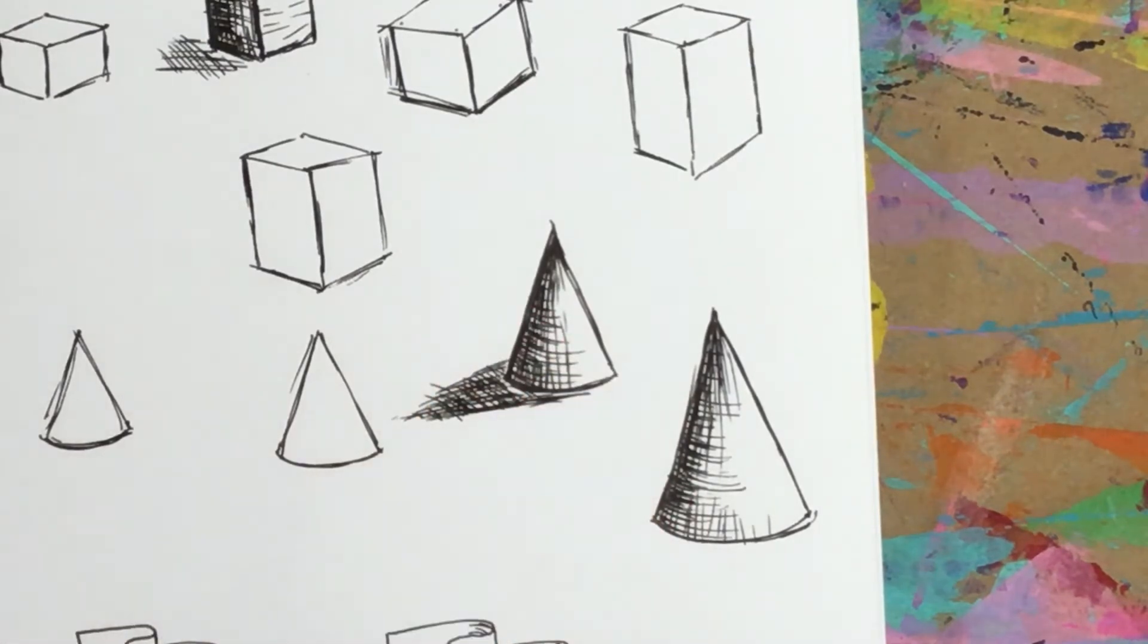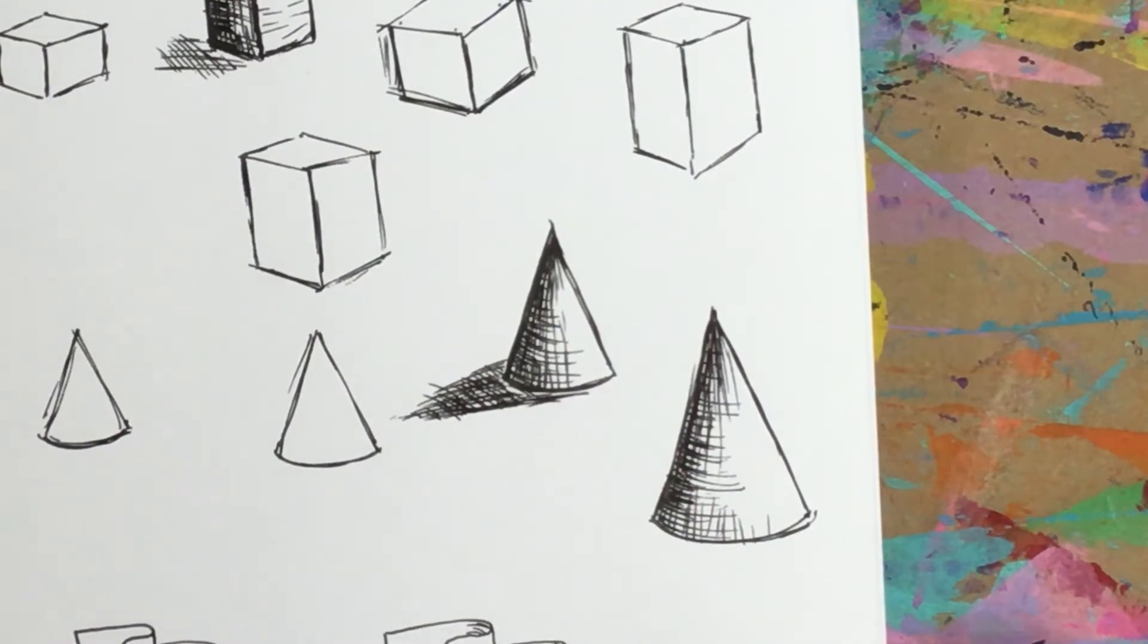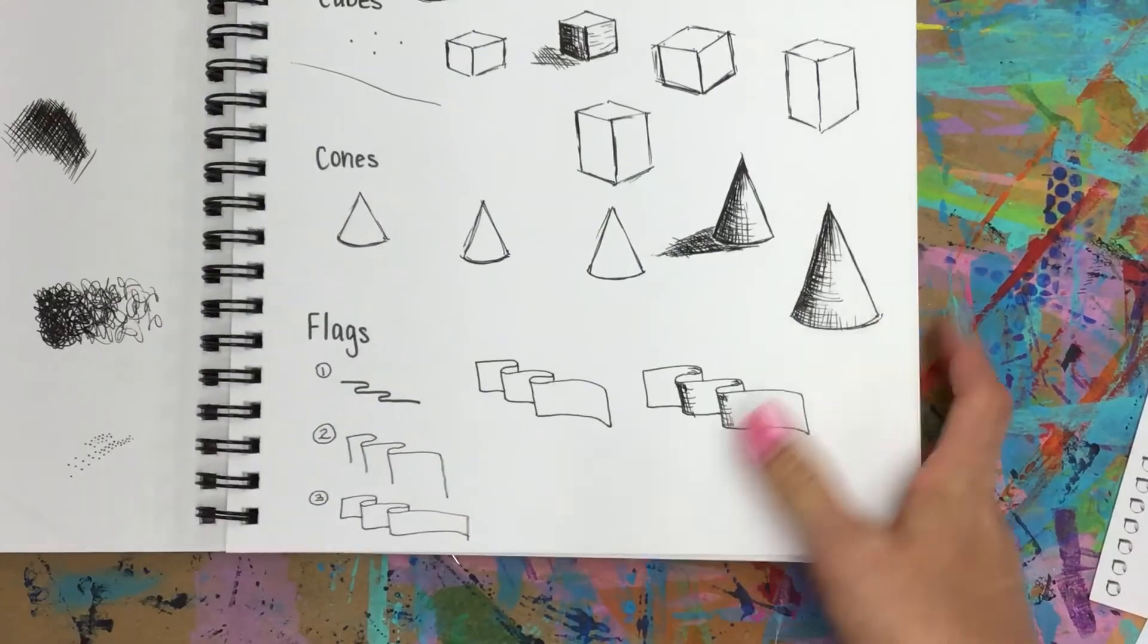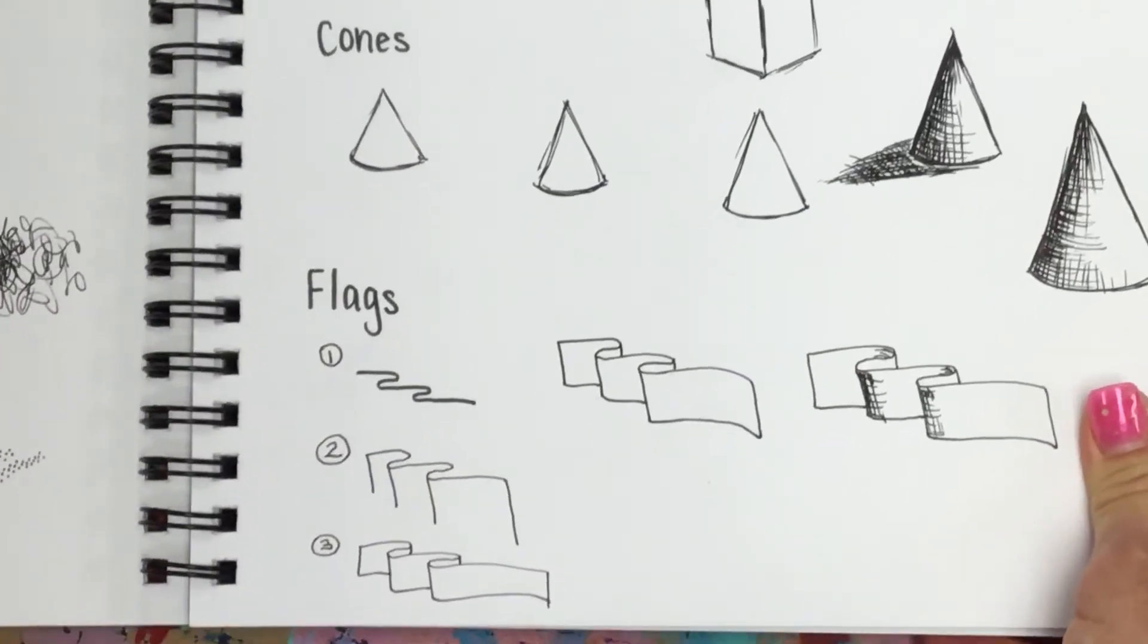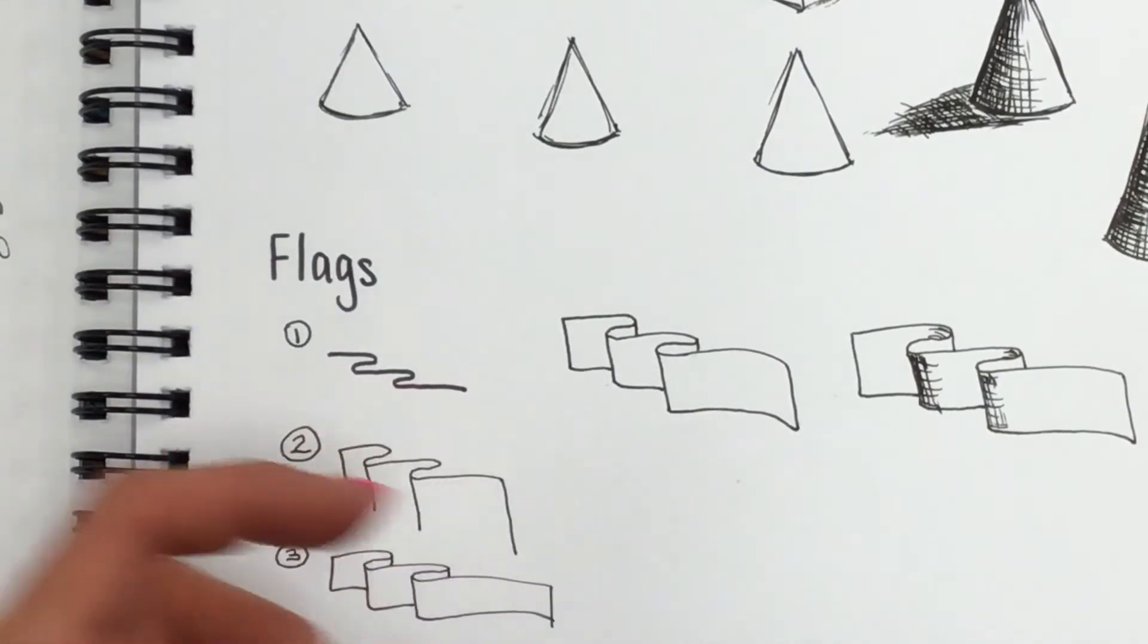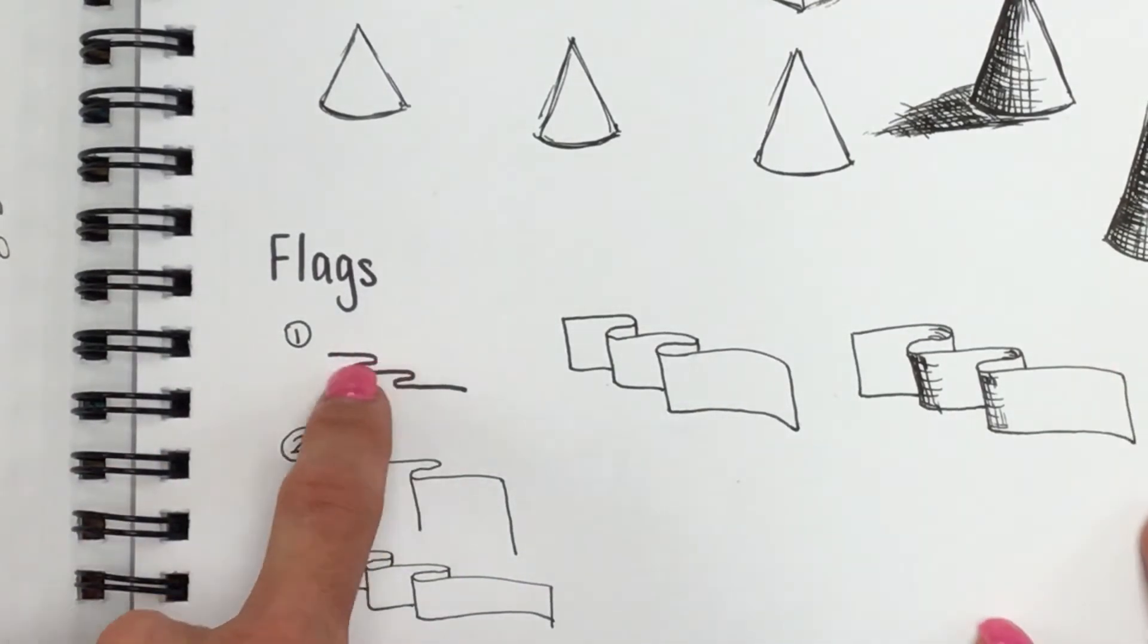Same with the cylinder, your shading lines will curve to show that it's still a rounded object. And then we did flags. For the flag, if you've never done one before, there's different ways to do it. This is how we're going to do them: you're going to do an elongated line that goes back and forth kind of fan folding, but you don't want it super tall, you want it long.